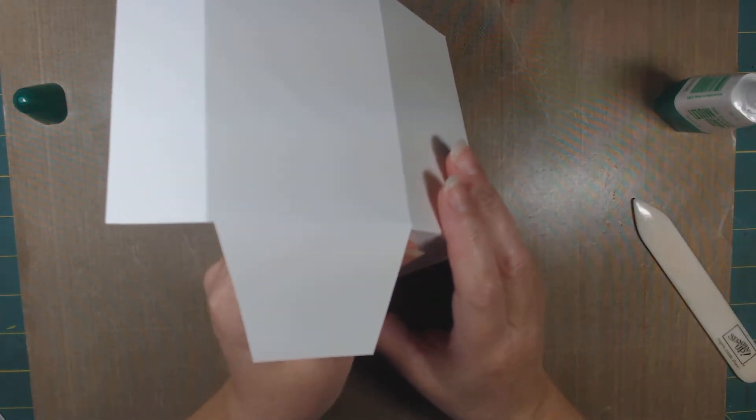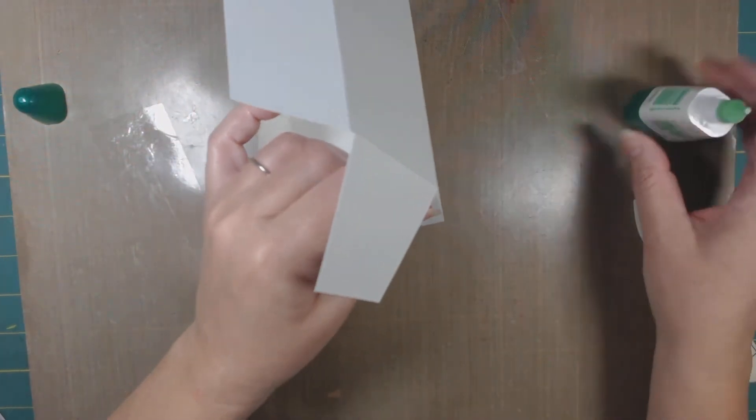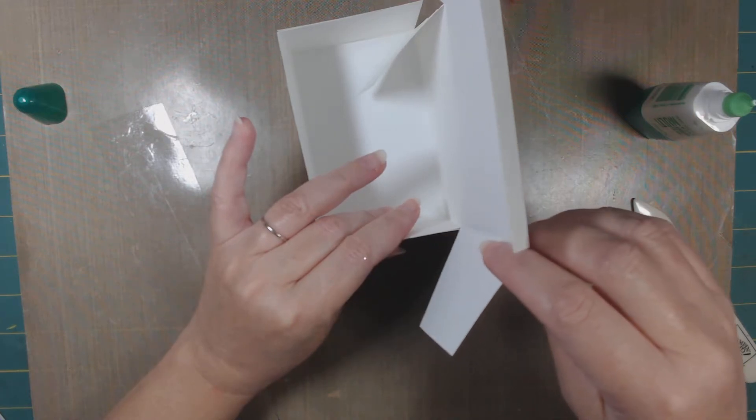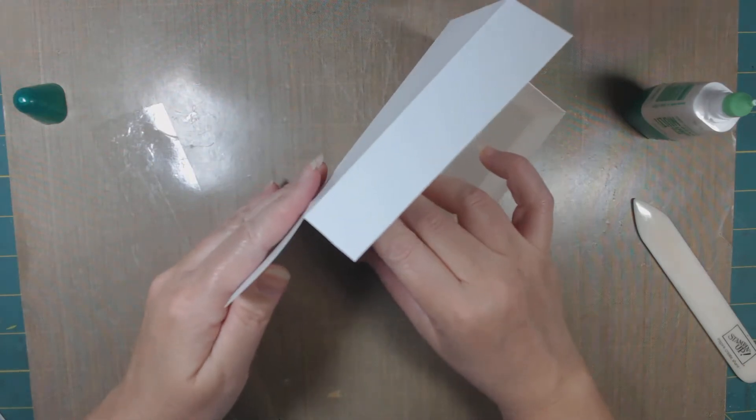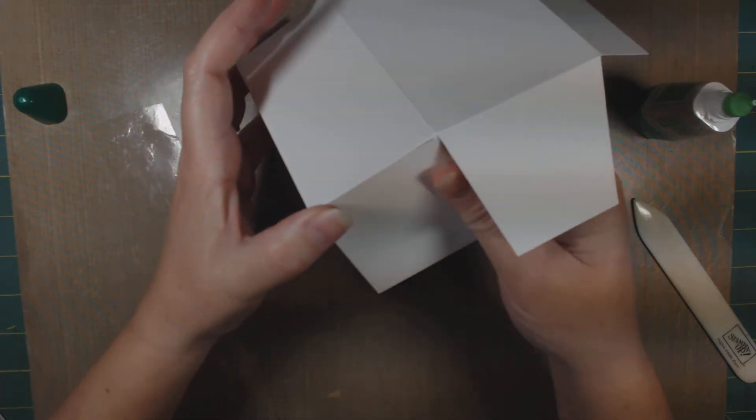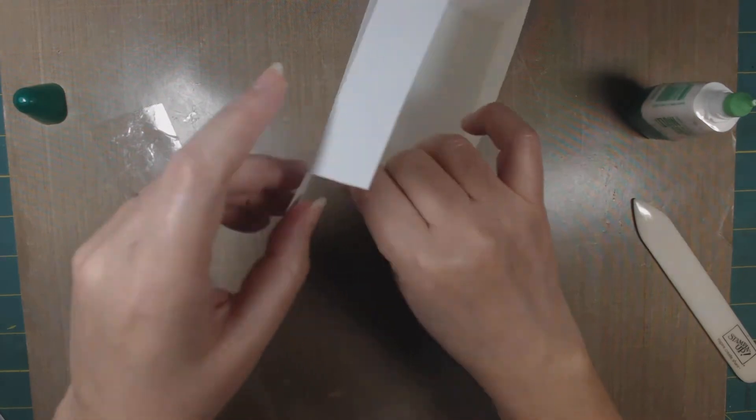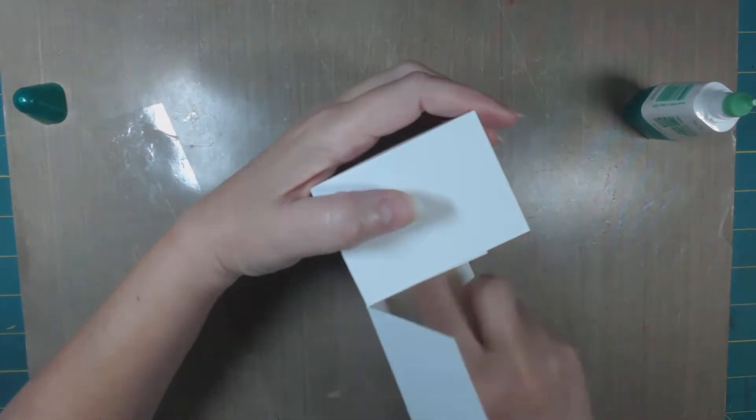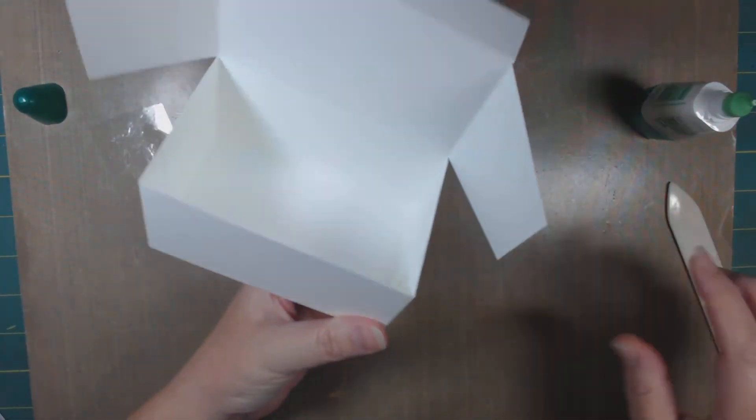And I like to use this Tombow Liquid Glue or pretty much any liquid glue, but I use the Tombow Liquid because it seems to hold a little better. And plus, it gives you a little wiggle room. So if you have to move the paper around or slide it, you've got a couple of seconds before it actually sticks down permanently. So you can slide your paper around if you need to. Press those in place and then go back and burnish it out with your bone folder.